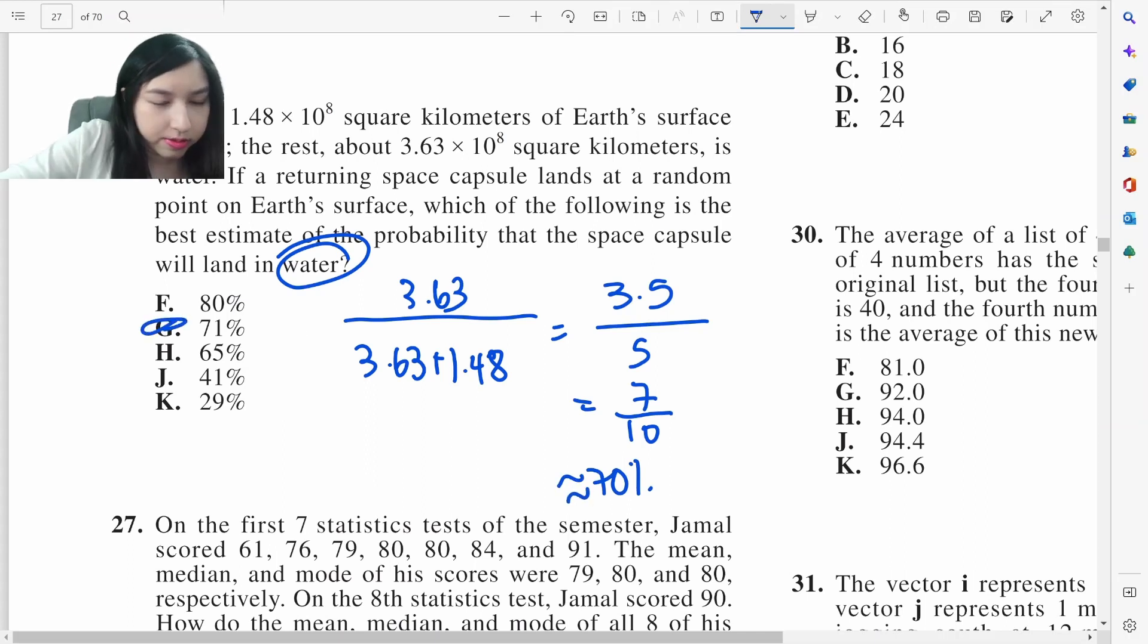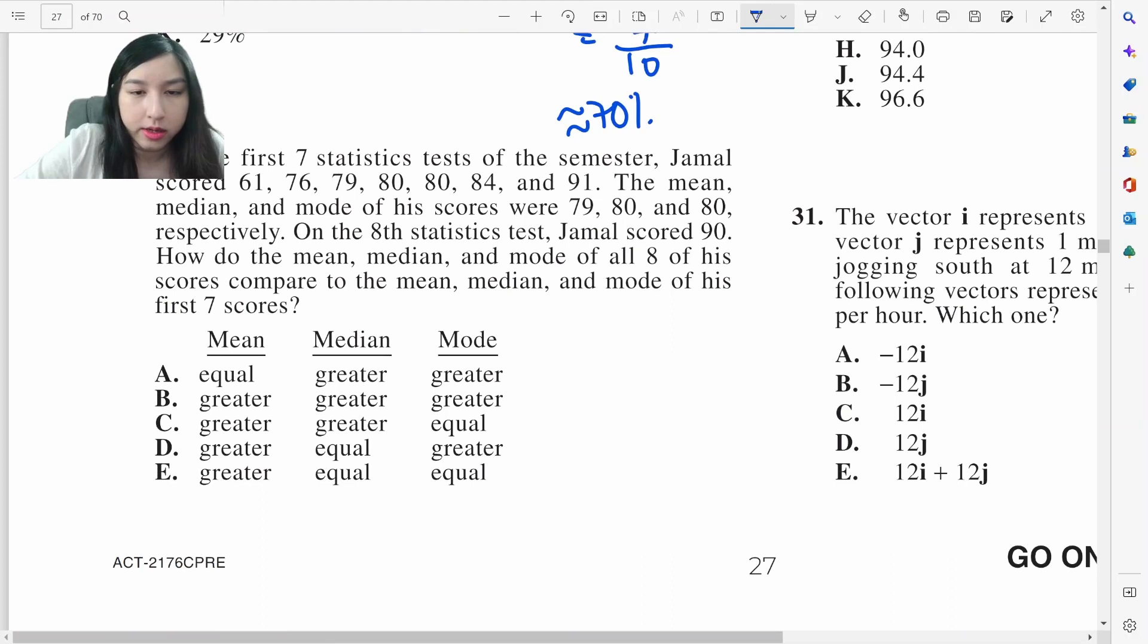Seven tests. How do the mean, median, mode compare to the previous? He's got seven things here. Mean is 79, median is 80 and mode is 80. On the eighth test, he scored a 90. If he scored a 90, 90 is greater than 79, the mean would go up. How about the median? If he scored a 90, 61, 78, 79, 80, 90, they're all sorted. 90 would go about here. The new median is about here which is still 80. It stays the same. And the mode is still 80. So it's going to be E.